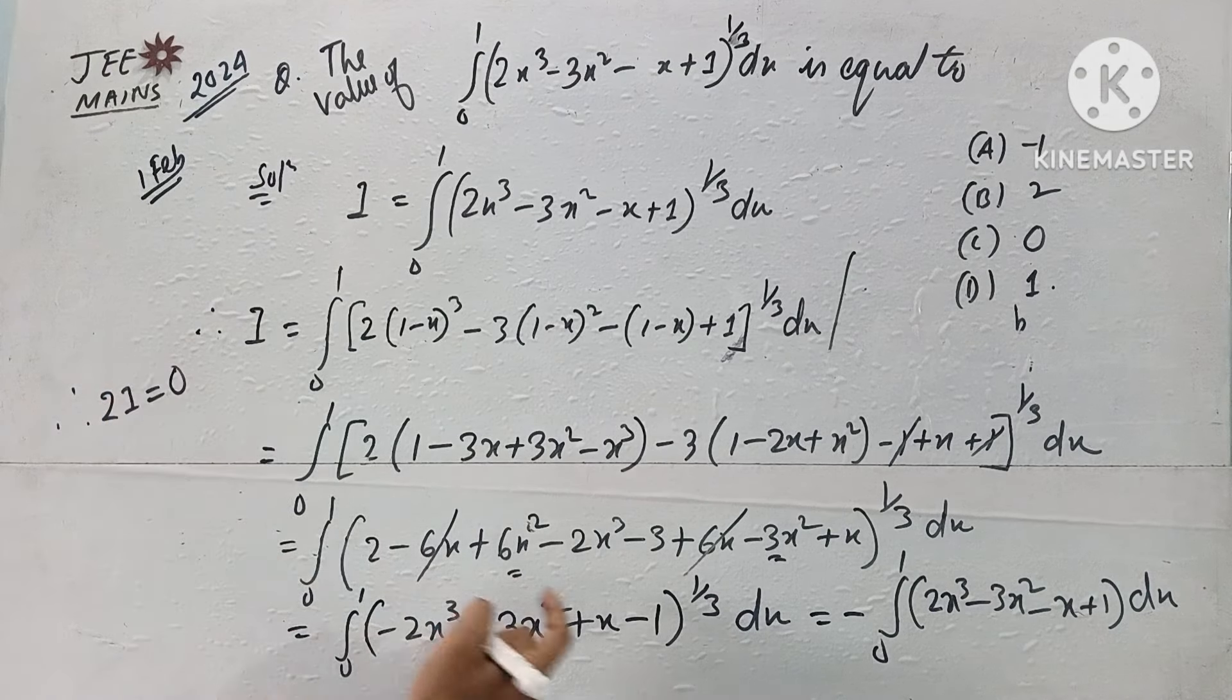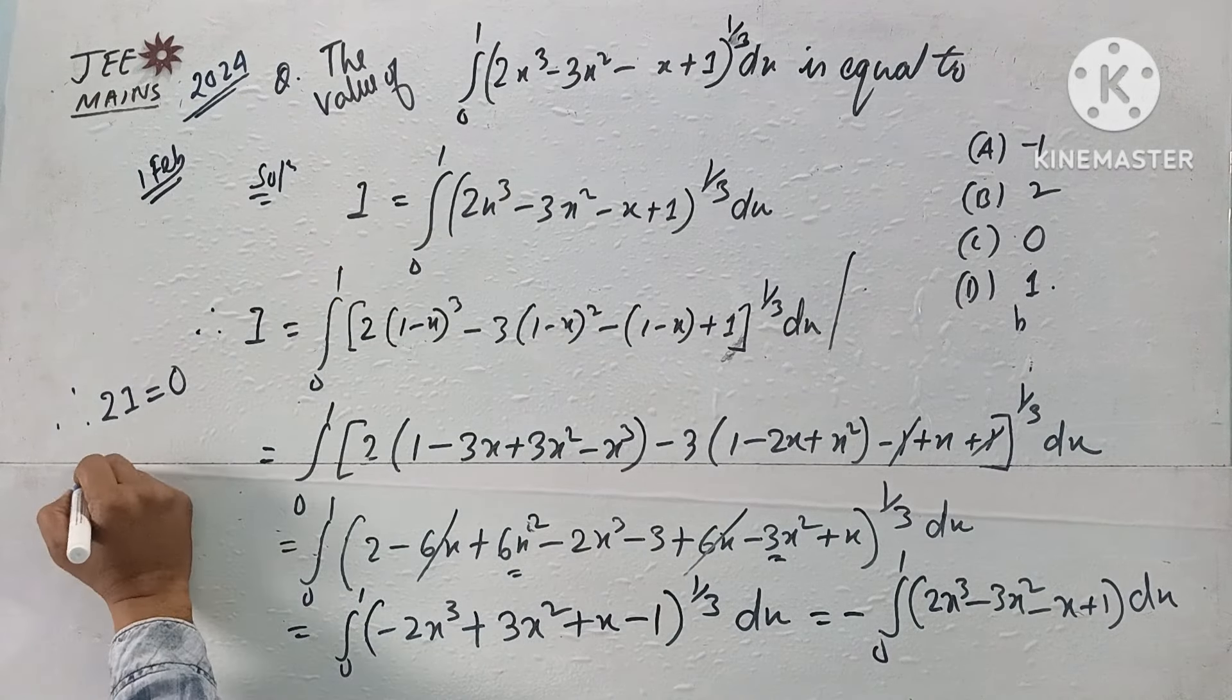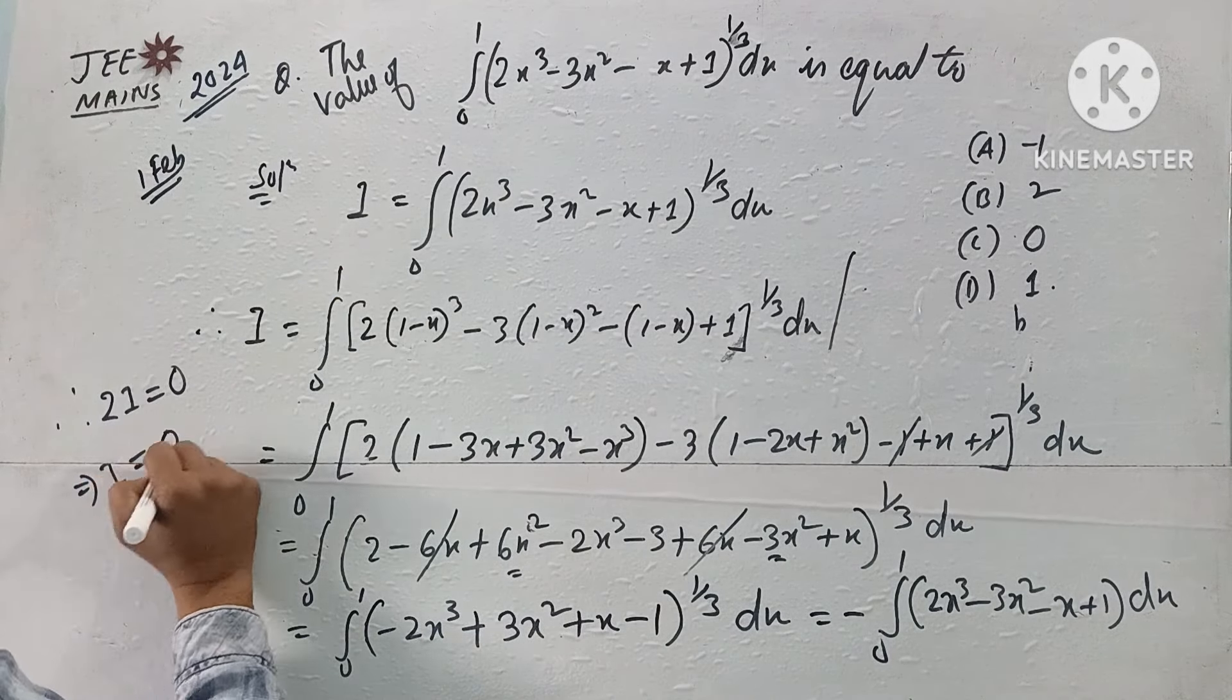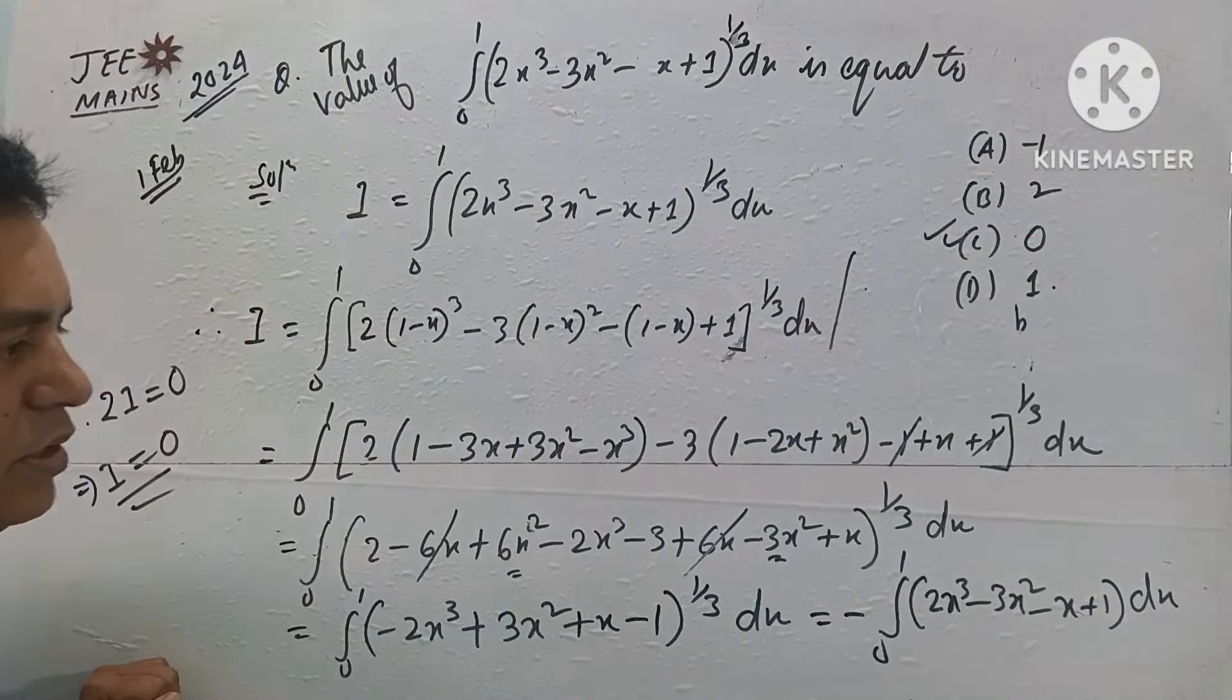Adding both sides gives 2I equal to 0. Therefore I equals 0, so the integral's value is 0, which is option C.